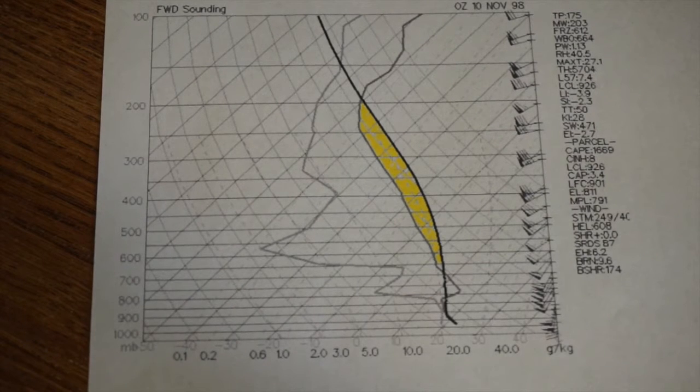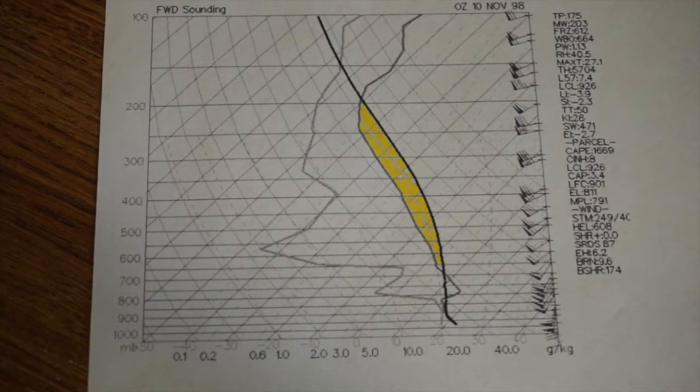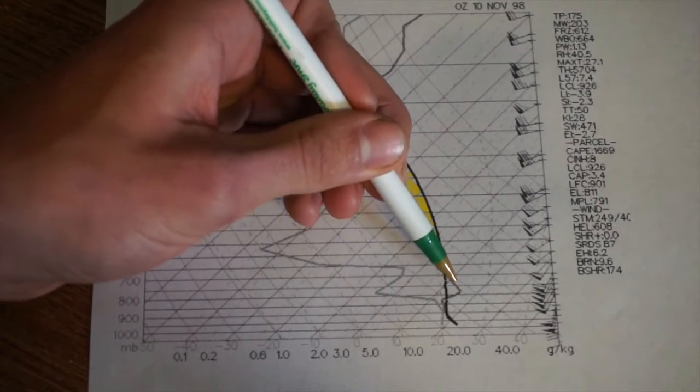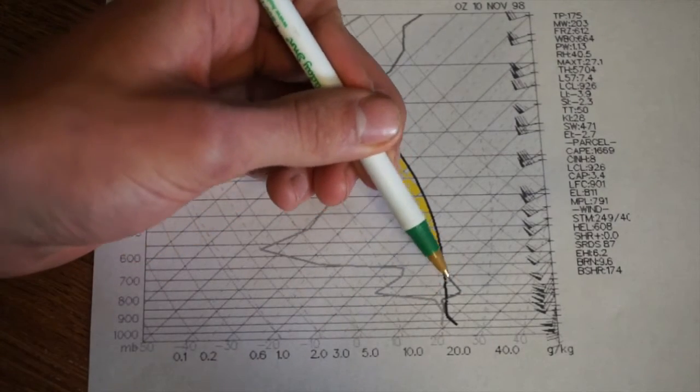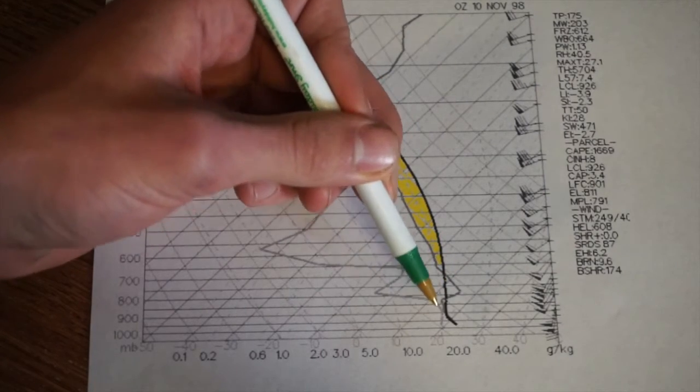For today's video, I want to discuss CAP or CIN, which is convective inhibition. That is this right here on the skew chart. This is where air actually warms as you gain altitude instead of cooling.